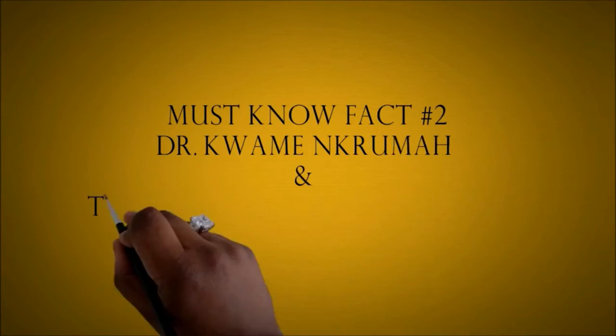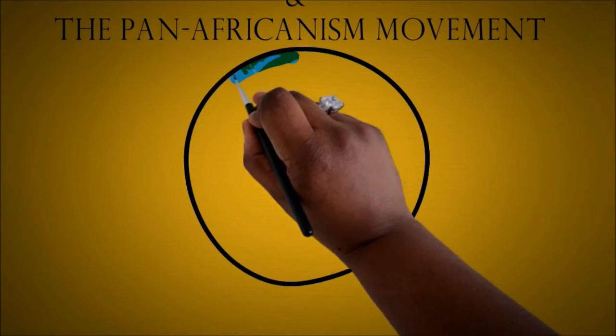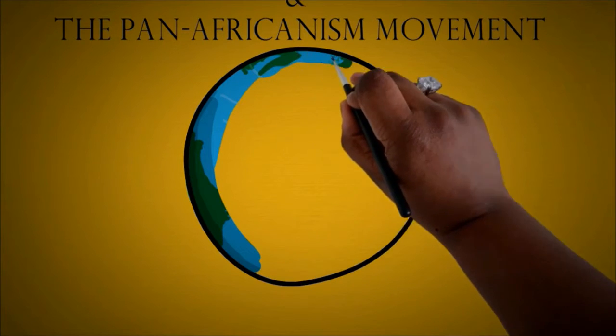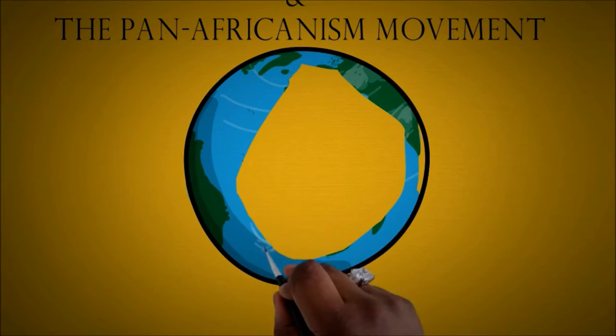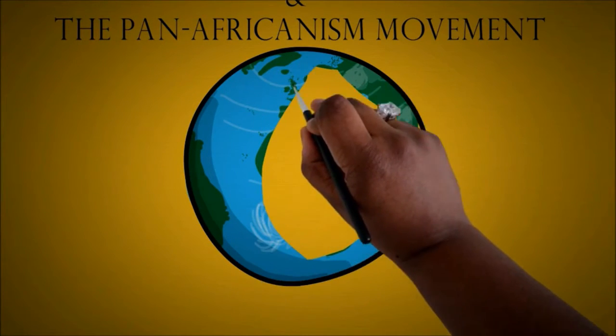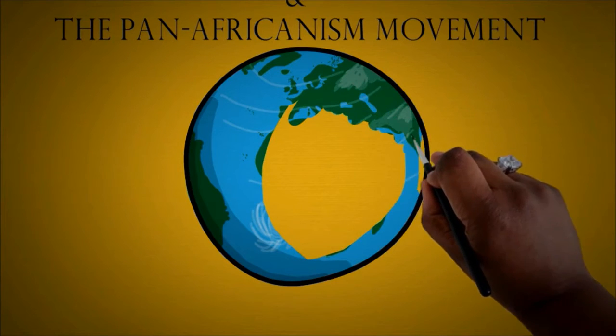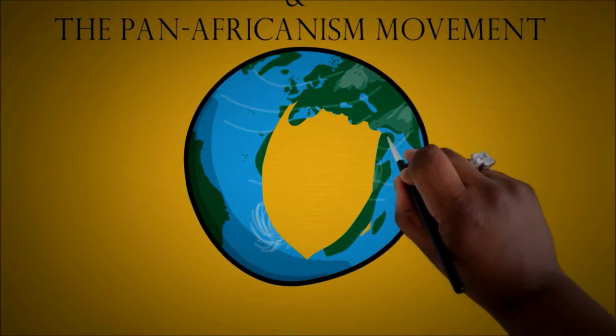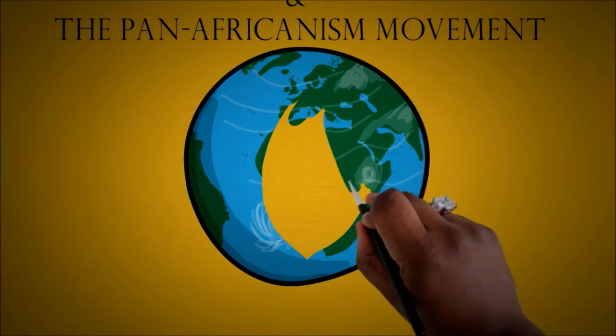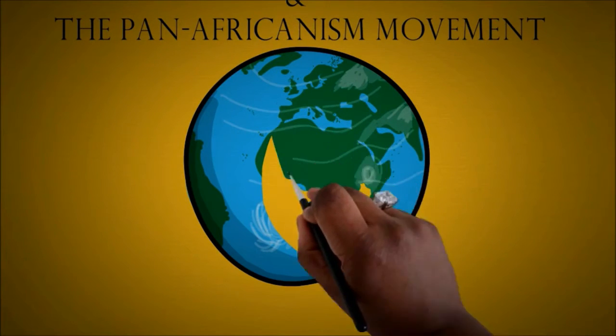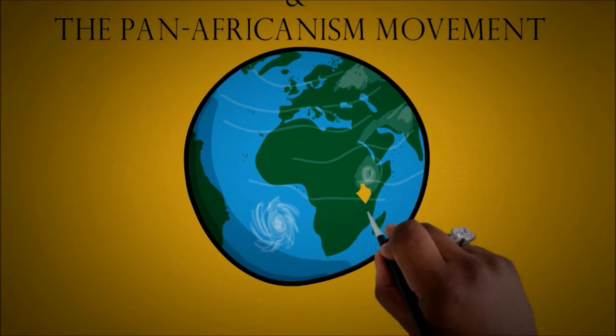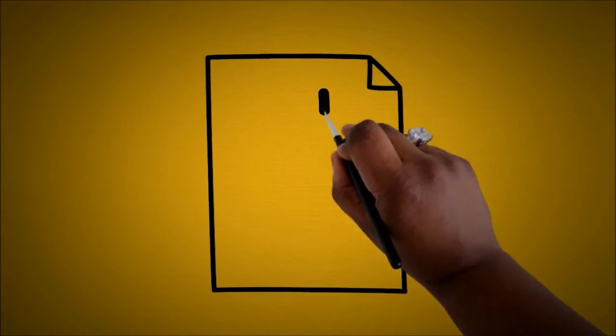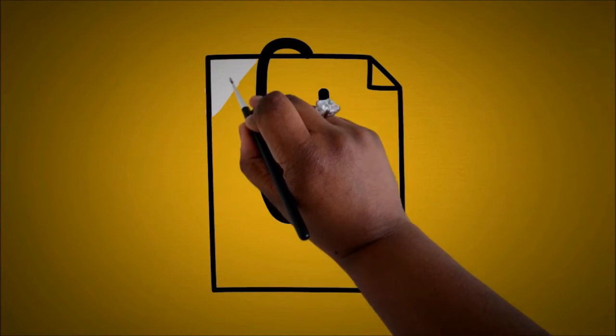Must-know fact number two: Dr. Kwame Nkrumah and Pan-Africanism movement. Dr. Kwame Nkrumah was believed to have truly fathered the Pan-Africanism movement, hence our beloved country became the face of Pan-Africanism when Ghana became the first sub-Saharan African country to gain independence in 1957. You see, Dr. Kwame Nkrumah was of the opinion that as Africa was divided in 1884-1885 at the Berlin Conference, also known as the Scramble for Africa or Rape of Africa, that we simply cannot accept divisions imposed upon us by our enemies. Africa is one, hence we must unify her.